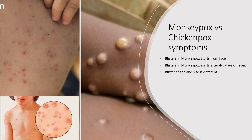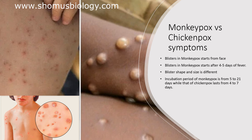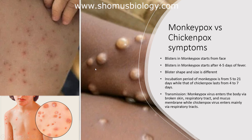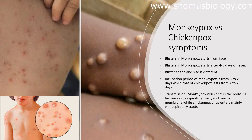Blister shape and size also differs. The images on the left-hand side show chickenpox blisters, while the right-hand side image shows a harder, much bigger, more complete blister structure — an example of monkeypox blisters. The incubation period for monkeypox ranges from 5 to 21 days, while for chickenpox it lasts 4 to 7 days. Transmission of monkeypox occurs via broken skin from blisters, the respiratory tract, and mucous membranes, while chickenpox transmits mainly via the respiratory tract.